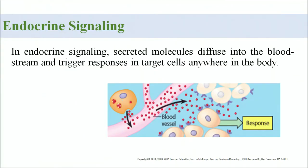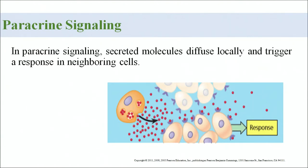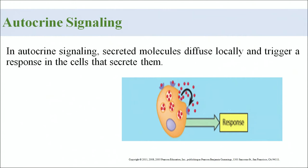In endocrine signaling, the secreted molecule diffuses into the bloodstream and triggers a response in the target cell. In paracrine signaling, the secreted molecule diffuses locally and triggers a response only in neighboring cells. In autocrine signaling, the secreted molecule diffuses locally and triggers a response in the very cell that secreted it.